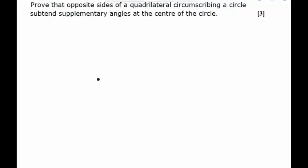Hello students, in this question we have to prove that the opposite sides of a quadrilateral circumscribing a circle subtend supplementary angles at the center of the circle.